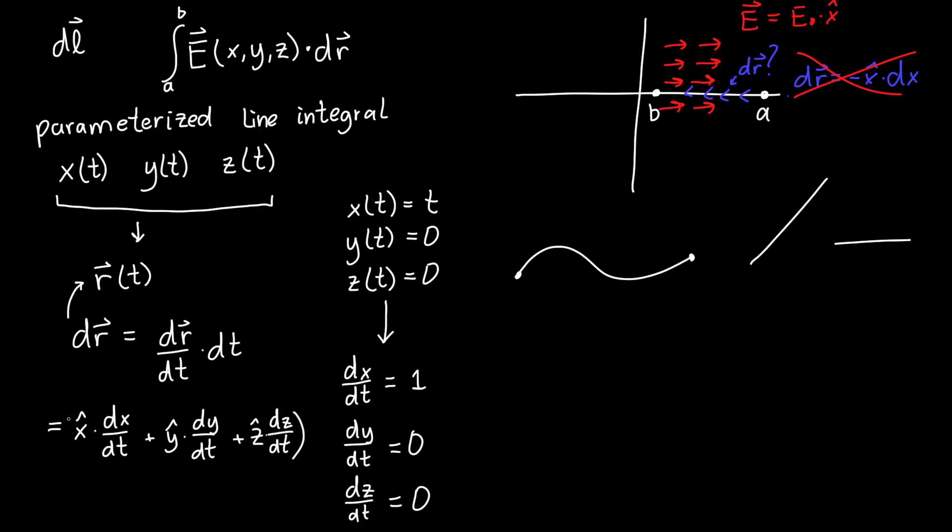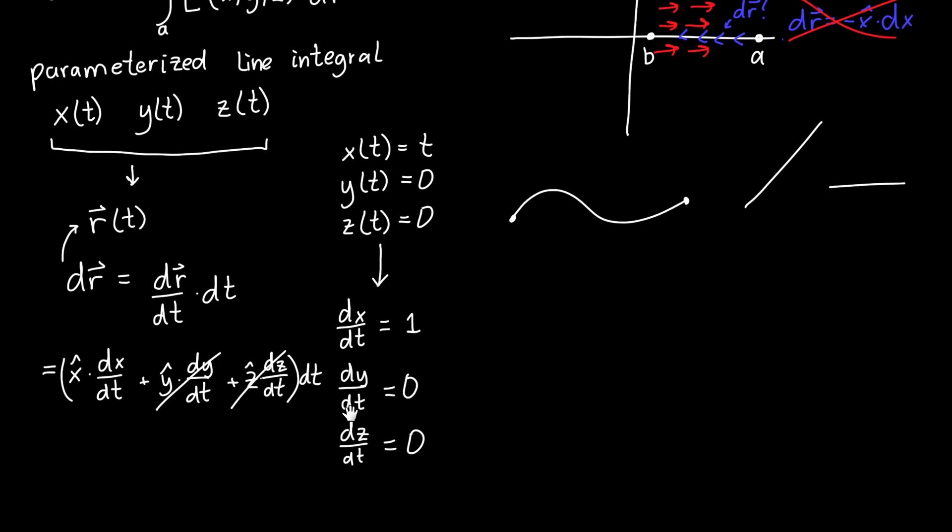And so in our case, if we're just talking about the x-axis, then these two dy/dt and dz/dt are 0, and we're just left with dr being equal to x hat times dx/dt, which is just 1 times dt. Now notice that this is positive. So dr is actually pointing in the positive x-axis direction.